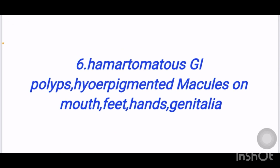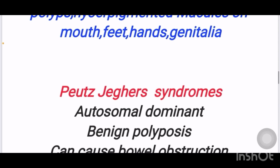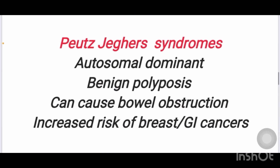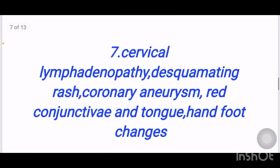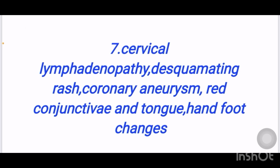Next scenario: hamartomatous GI polyps and hyperpigmented macules on mouth, feet, hands, and genitalia. The diagnosis is Peutz-Jeghers syndrome. It is autosomal dominant; benign polyposis is seen and can cause bowel obstruction with increased risk of breast and GI cancers. There is an STK11 mutation.